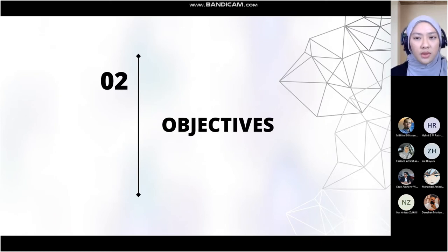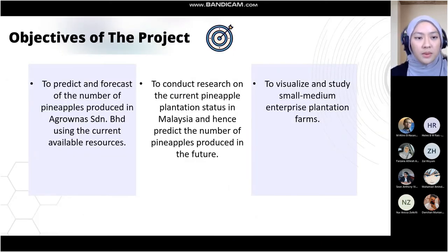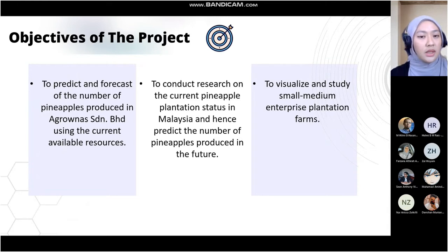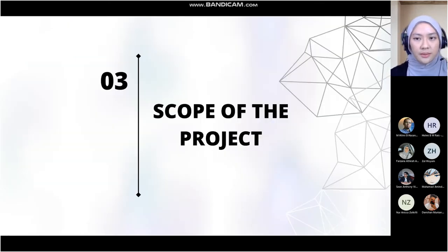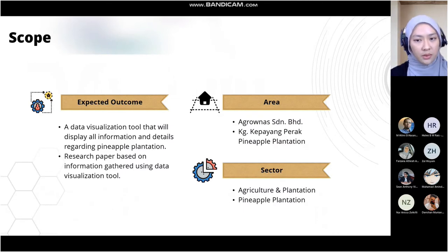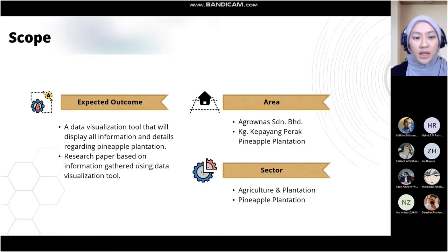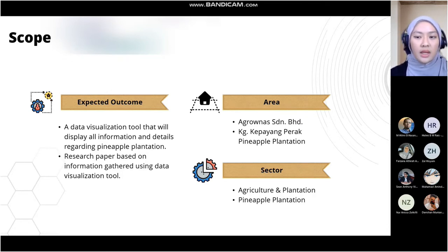Moving on to the objectives of the project. First, to predict and forecast the number of pineapples produced in Argonas using current available resources. Second, to conduct research on the pineapple plantation status in Malaysia and predict the number of pineapples produced in the future. Third, to visualize and study small-medium enterprise plantation. The scope includes a data visualization tool displaying all information regarding pineapple plantation, a research paper based on gathered information, and focuses on Argonas Sundrian Berhad at Kampung Kempayan Perak in the Agriculture and Plantation sector.